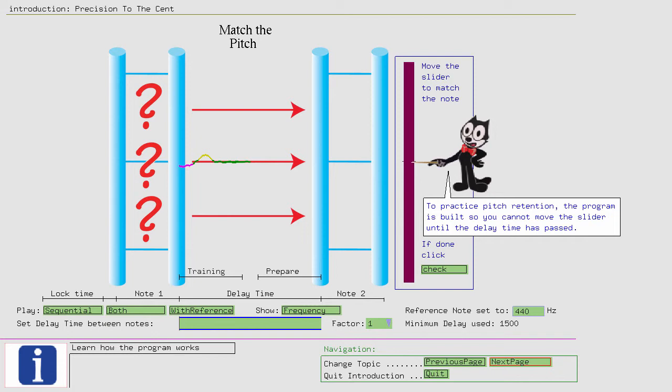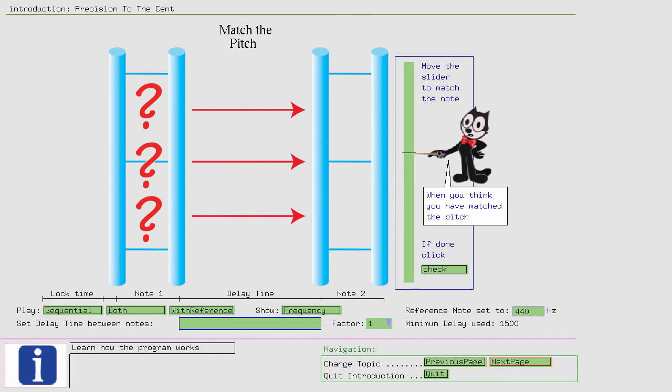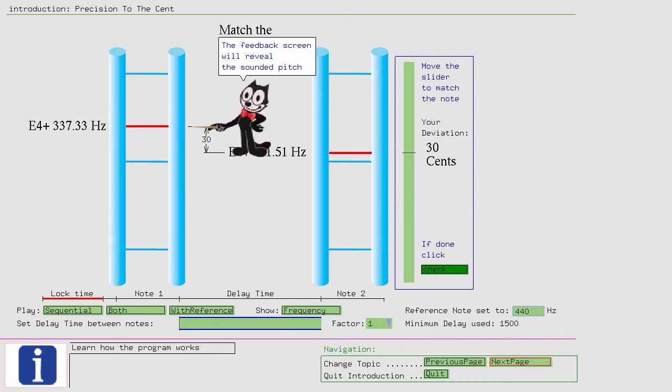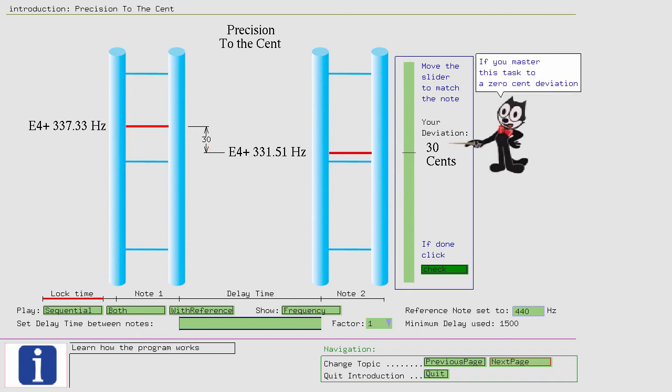To practice pitch retention, the program is built so you cannot move the slider until the delay time has passed. After that delay, you can position the slider. When you think you have matched the pitch, click on check. The feedback screen will reveal the sounded pitch and your deviation from it in cents. If you master this task to a zero-cent deviation, you can tune an instrument perfectly.